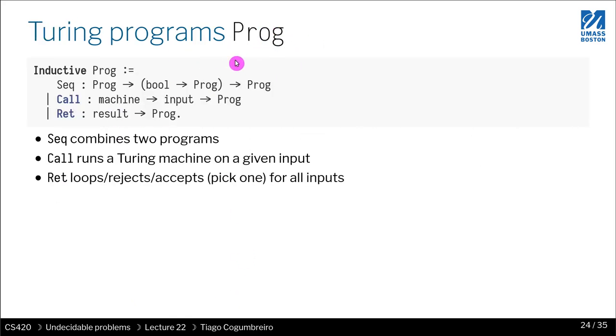So what is a program? A Turing program can be one of three things - a very simple domain-specific language. It could be a sequence of two programs where we run one program, and if the program terminated, we can continue to a second program. We can know whether the first program accepted or rejected. We may not observe whether the first program looped, because that would break the theory.